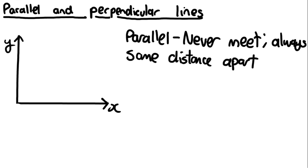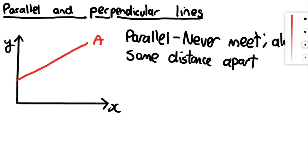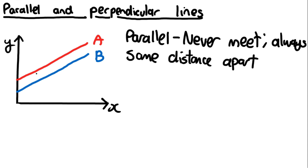Let's represent this graphically. Let's draw line A in red, looking something like this, and label it A. And let's draw line B in blue, something like this, and label it B. These two lines are parallel because they are always the same distance apart, and therefore they will never actually meet or intersect.